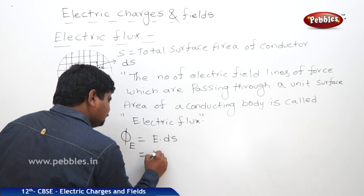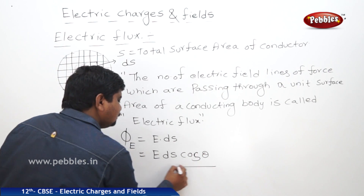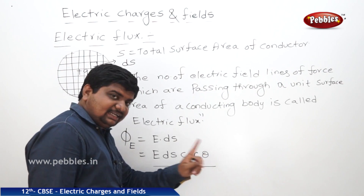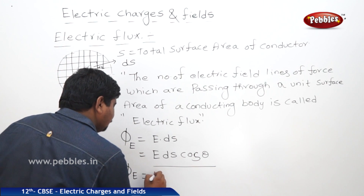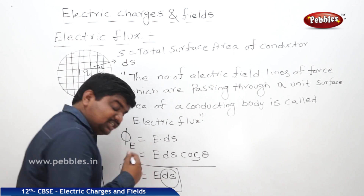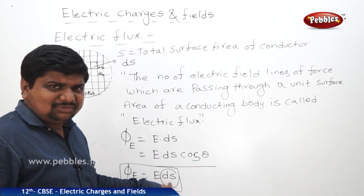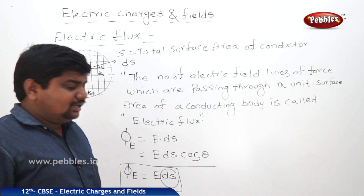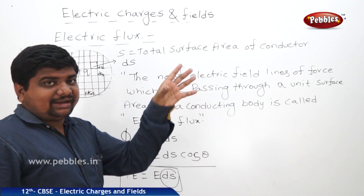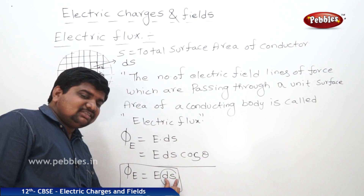Since electric field lines and the surface are always perpendicular to each other, cos 90 equals 1. Therefore, phi_E equals E dS. The value of dS changes with the shape of the conductor — for a sphere, the surface area is 4πr squared. For cylindrical, trapezoidal, or triangular shapes, the surface area changes. E is constant; only dS varies.